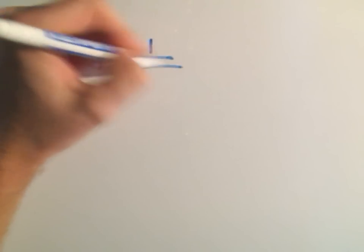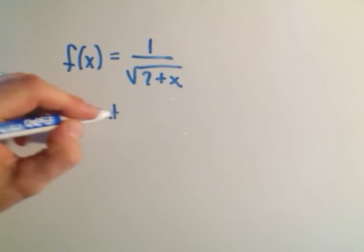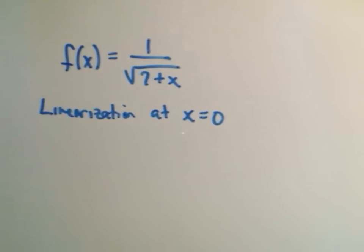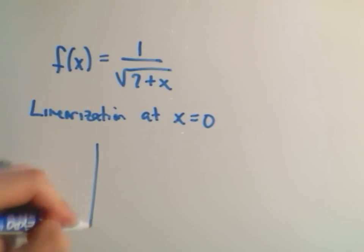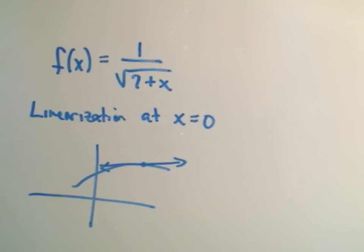So f of x is 1 over the square root of 7 plus x, and they want the linearization at x equals 0. All you're doing when they say find a linearization at something, you're just finding an equation of a tangent line there. That's all that you're doing.